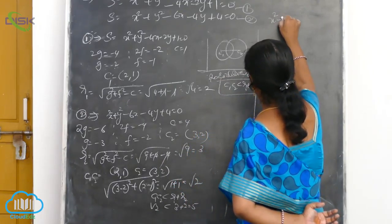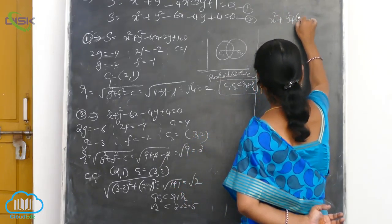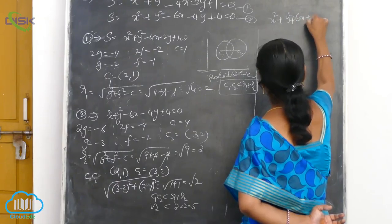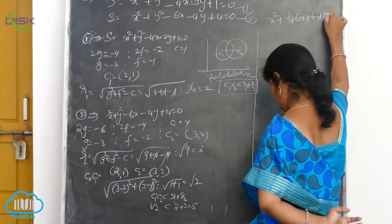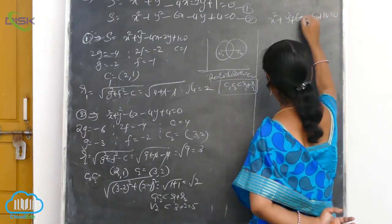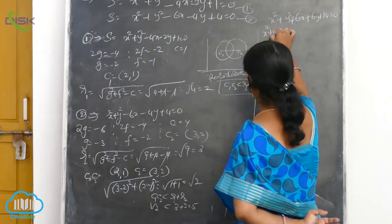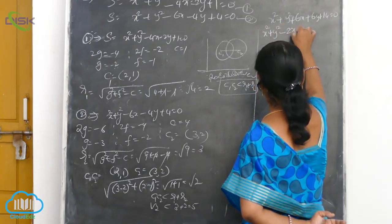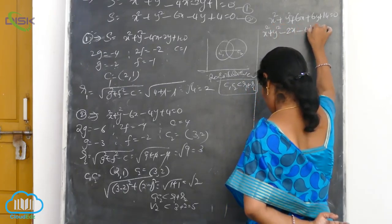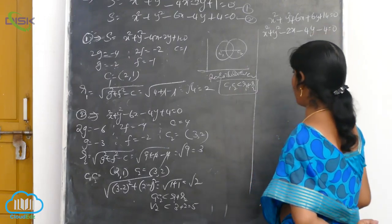Here we go. We have a new example: x squared plus y squared plus 6x plus 6y plus 14 is equal to 0, and x squared plus y squared minus 2x minus 4y minus 4 is equal to 0.